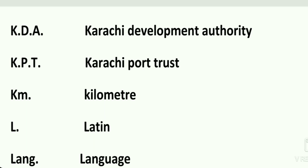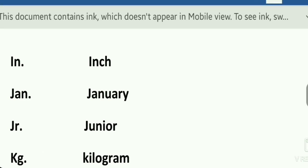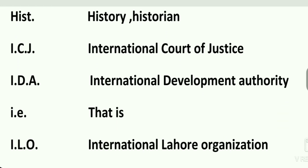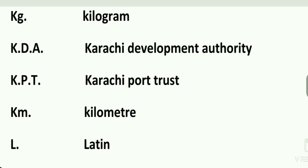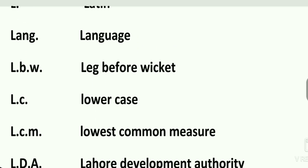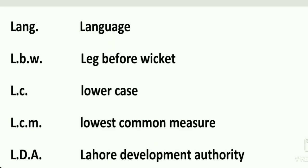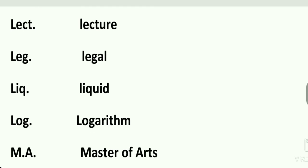Jan. is January. Jr. is junior. Kg. is kilogram. K.D.A. is Karachi Development Authority. K.P.T. is Karachi Port Trust. Km. is kilometer. L. is Latin. Lang. is language. L.P.W. is leg before wicket. L.C. is lowercase. L.C.M. is lowest common measure. L.D.A. is Lahore Development Authority.